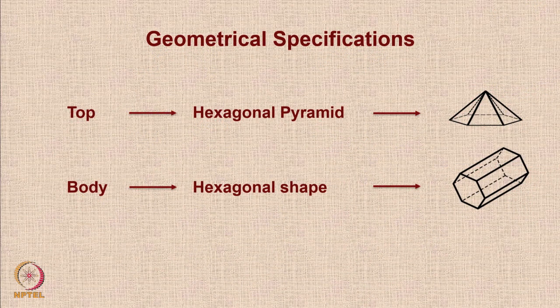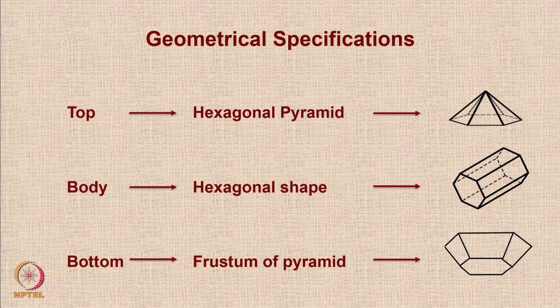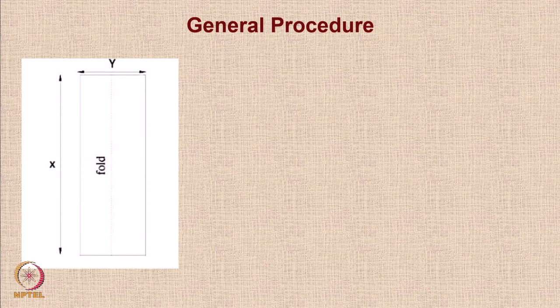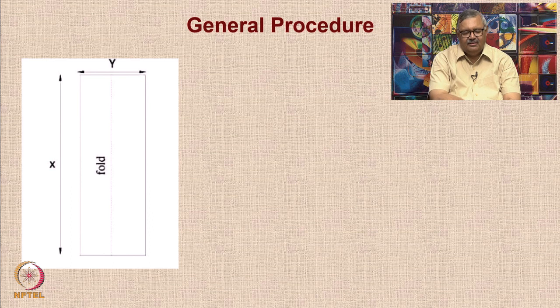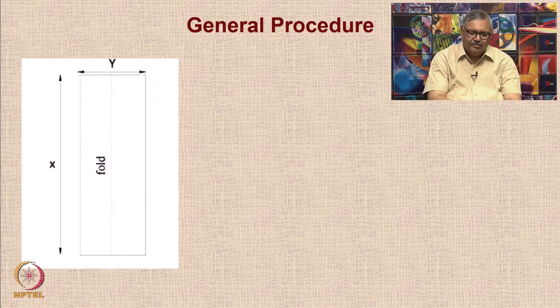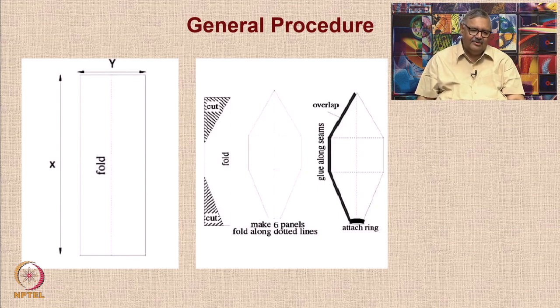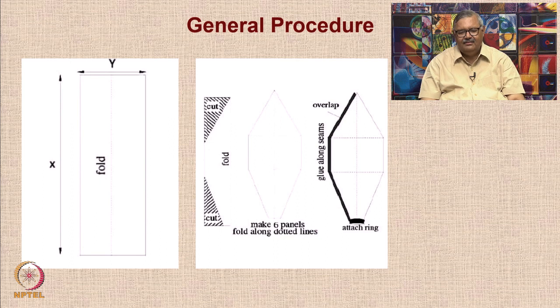Looking at the geometrical specifications of the hot air balloon: we are going to use a balloon with a hexagonal pyramid on top, a hexagonal cylindrical body, and a frustum of a pyramid on the bottom — so you are reasonably close to an actual balloon shape. The procedure is to obtain material from shopkeepers; the paper comes in standard dimensions x and y found through a market survey. You create basic templates and join the balloon at those template areas.